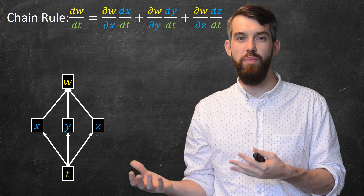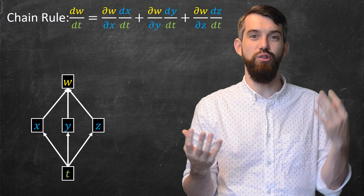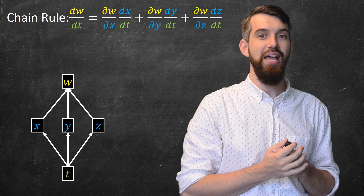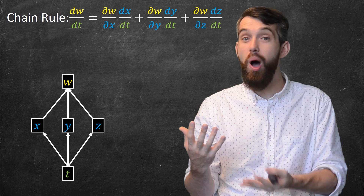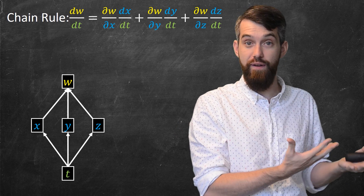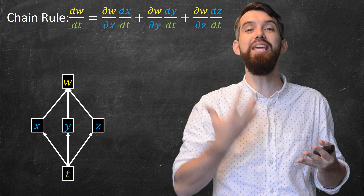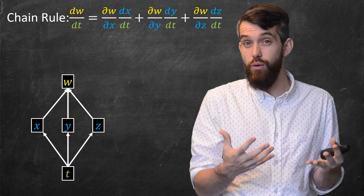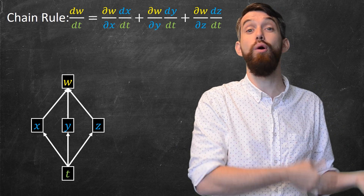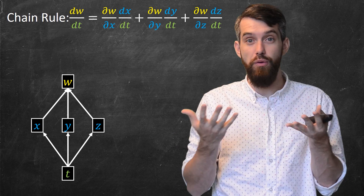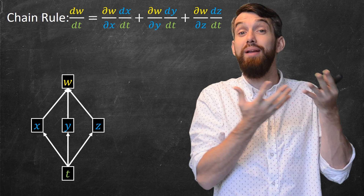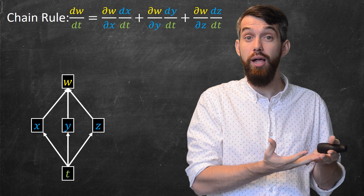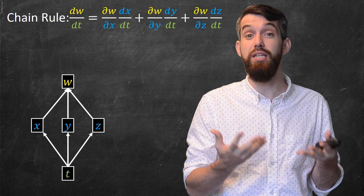There was nothing particularly special about having our function depend on just x and y. I can state the exact same kind of formula if w depends on x, y, and z, and perhaps more variables. If you have more variables, you just keep adding up terms like that. There are still questions about what happens if you have more output variables or more input variables, but we'll investigate those in the future.